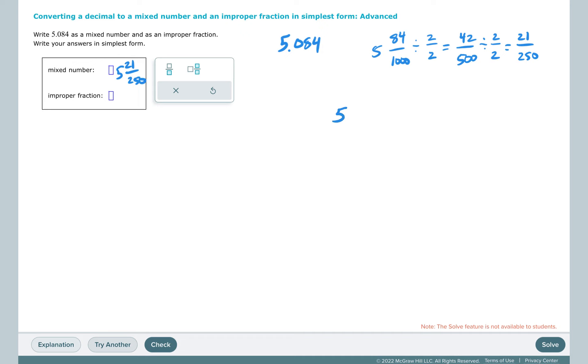To change 5 and 21 over 250 to an improper fraction, I'm going to multiply 5 times 250, and that's 1,250, and then I'm going to add back 21, which gives me 1,271, and my denominator is 250. So 1,271 over 250, and I should already be in simplest form because my mixed number was in simplest form.